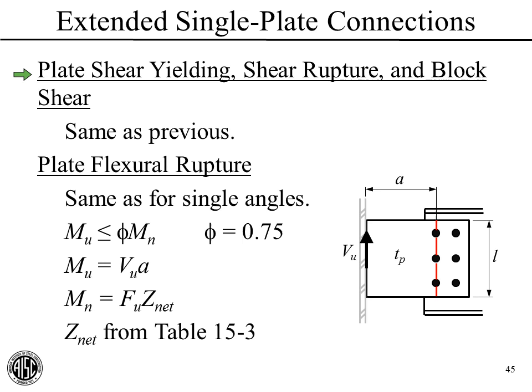Starting with the easy ones—plate shear yielding, shear rupture, and block shear—those are the same as we've done throughout the series. Plate flexural rupture is a little new but the same as for single angles: the criterion for LRFD is M sub U equals V sub U times A (the A distance to the first line of bolts), and M sub N equals F sub U times Z net through that line, using Table 15-3 for Z net when possible. Note that for this design model we're placing the hinge right at the face of the support, which is why we use V sub U times A.